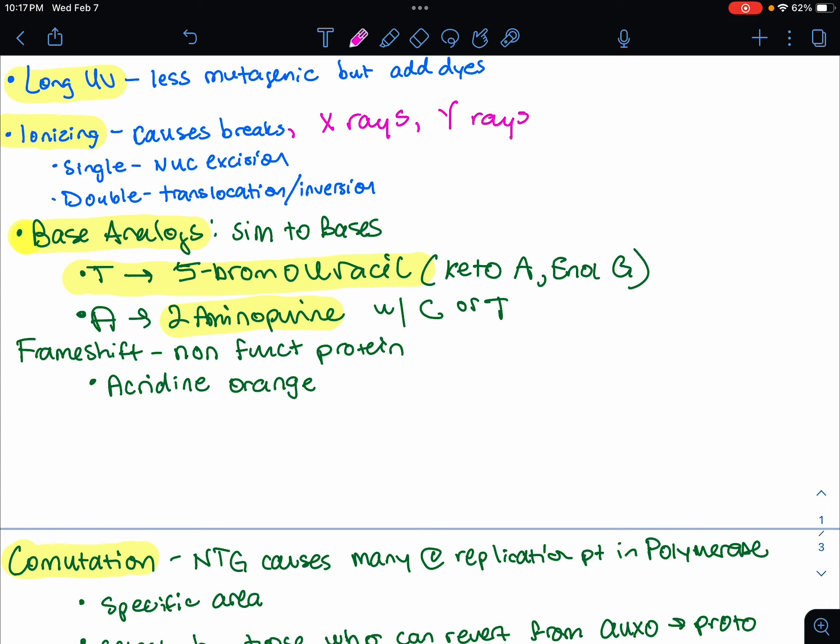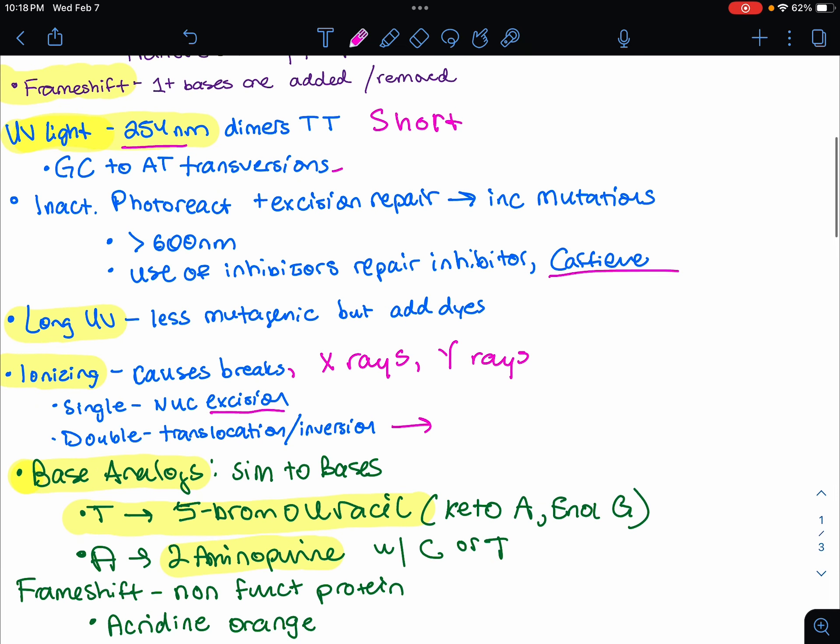We can have single-stranded breaks, which are repaired by nucleotide excision. Or double-stranded breaks, which could result in major structural changes. And these also include translocations or inversions. Mostly UV and mutagens are used, so we don't really see this often. We see short UV at 254 nanometers.